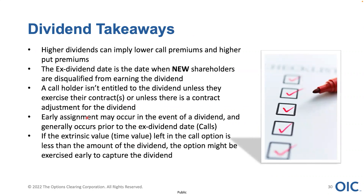Some dividend takeaways: Higher dividends imply lower call premiums and higher put premiums. The ex-date is the date when new shareholders are disqualified from earning the dividend — if you buy a stock on or after the ex-date, you will not receive the dividend. If you exercise a call on or after the ex-date, you will not receive the dividend for that quarter — it has to happen before the ex-date. A call holder isn't entitled to the dividend unless they exercise their contracts or there's a contract adjustment. Early exercise may occur in the event of a dividend and generally occurs prior to the ex-date if the extrinsic value or time premium left in that call is less than the amount of the dividend.